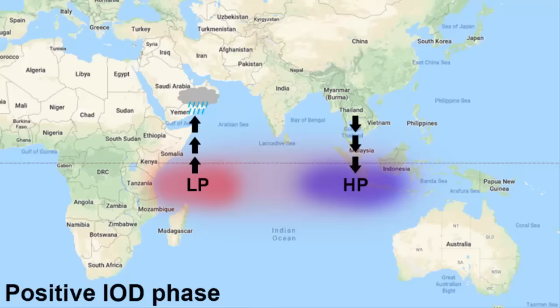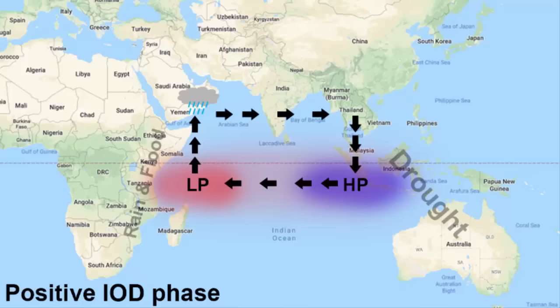During this time, the southeastern countries and northwestern Australia face severe drought conditions. On the other side, the coastline of Africa faces severe rain and floods. Air flows from high pressure to low pressure areas — this is what creates the global wind belts that profoundly affect regional climate, and that's how the entire circulation of air occurs.